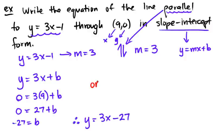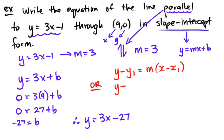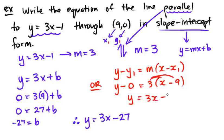Alternatively, you can use slope-point form: y minus y1 equals m times x minus x1. With y1 equals 0, x1 equals 9, and slope m equals 3, we get y minus 0 equals 3 times (x minus 9), which simplifies to y equals 3x minus 27. Both methods give the same answer — it doesn't matter which approach you use.